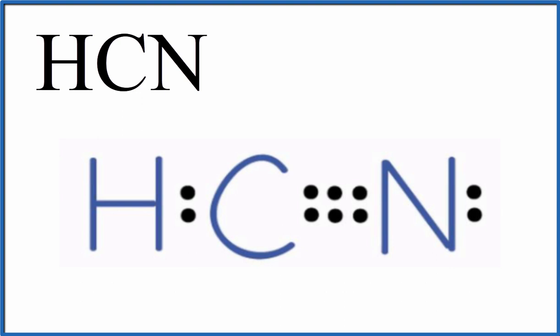So this is the Lewis structure for HCN, and you can see there's a triple bond between the carbon and the nitrogen, and then we have that lone pair of electrons there on the outside of the nitrogen atom. It doesn't look very symmetrical, and if it's not symmetrical, that's a clue that it might be a polar molecule.